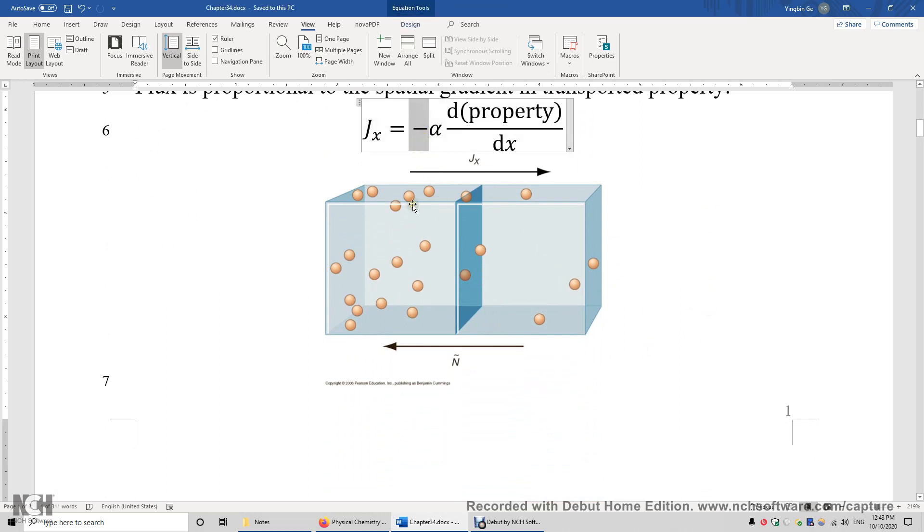This is because when you look at this picture, the density of the gas particles is higher on the left-hand side, lower on the right-hand side. So this, from right to left, is the increasing order of the density of the gas particles. The flux, however, is in the opposite direction. That's why we put a negative sign here.